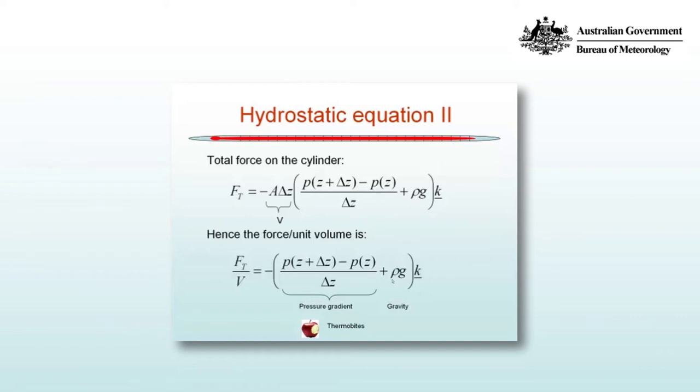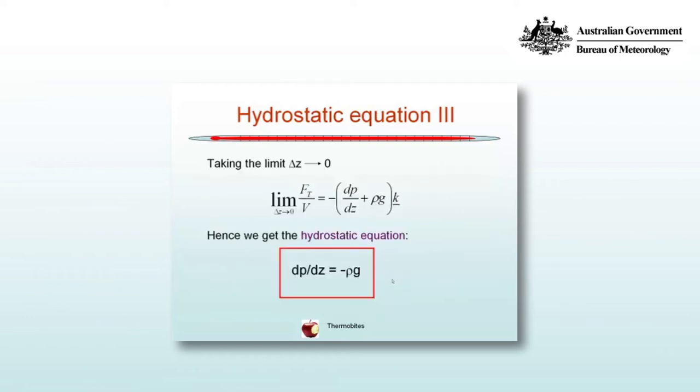What we do now is take the differential limit as delta z approaches zero. In the limit, the force per unit volume is minus dp/dz plus rho g in the k direction. The original goal was to find the balance of forces such that there's no net force or acceleration, so f equals zero, which means the terms inside the bracket must balance to zero giving dp/dz equals minus rho g.